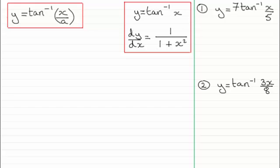Hi there. Now in this video what I want to show you is how we go about differentiating the inverse tan of x over a, where a is a positive constant. In the previous two videos I've shown you how to differentiate inverse sine and inverse cosine of x over a. And in this video it's really much the same.